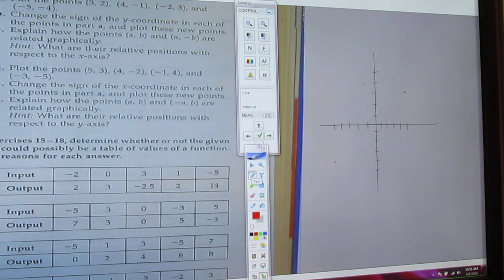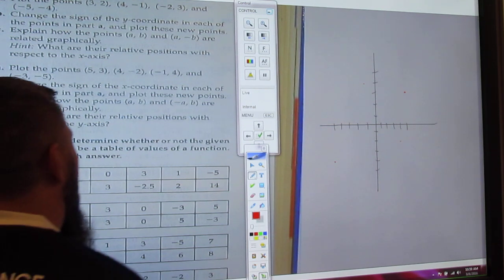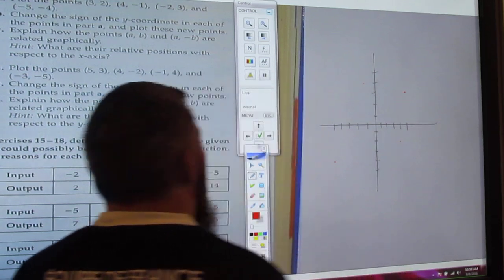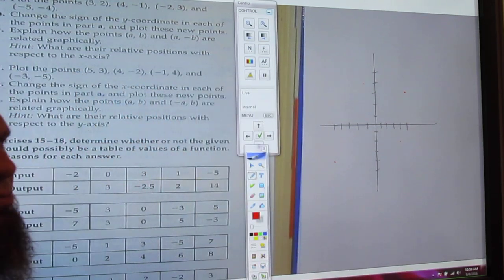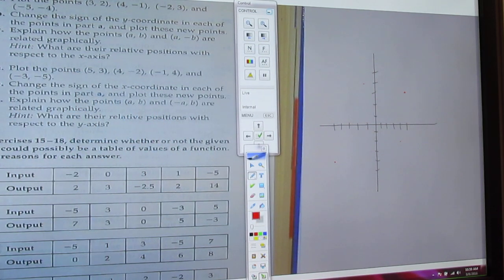And it says change the sign to the y-coordinate in each of the points in part A and plot these new points. So basically, they're going to take these points and they're going to change the y-coordinate, which is going to flip it across the x-axis.